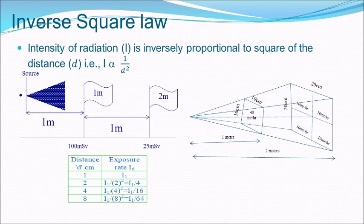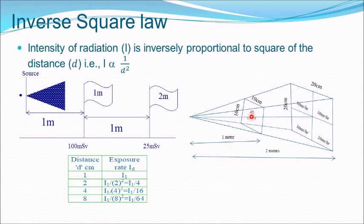This picture explains why dose reduces to one-fourth when you go from 1 meter to 2 meters. At 1 meter distance, a field size of 10 by 10 cm equals 100 cm² with an exposure of 40 mR per hour. At 2 meters, due to similar triangles, the field size becomes 20 by 20, which is 400 cm². The same number of photons from the 10×10 area are now distributed over 400 cm², so at any one point the photons are one-fourth of the original value.